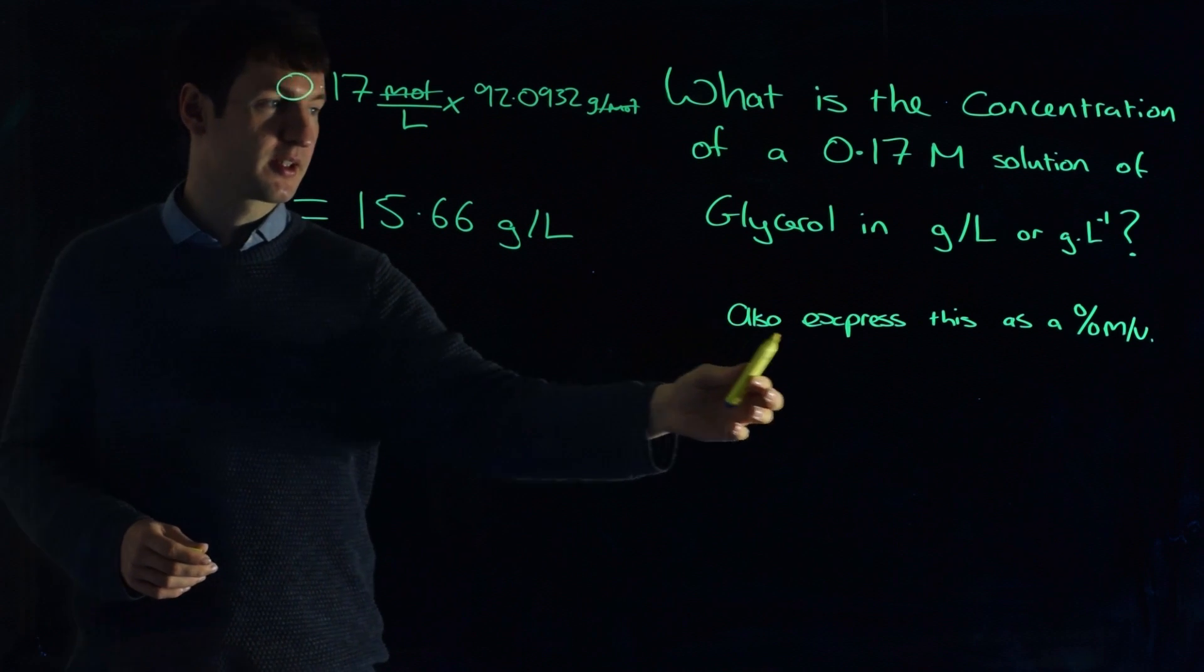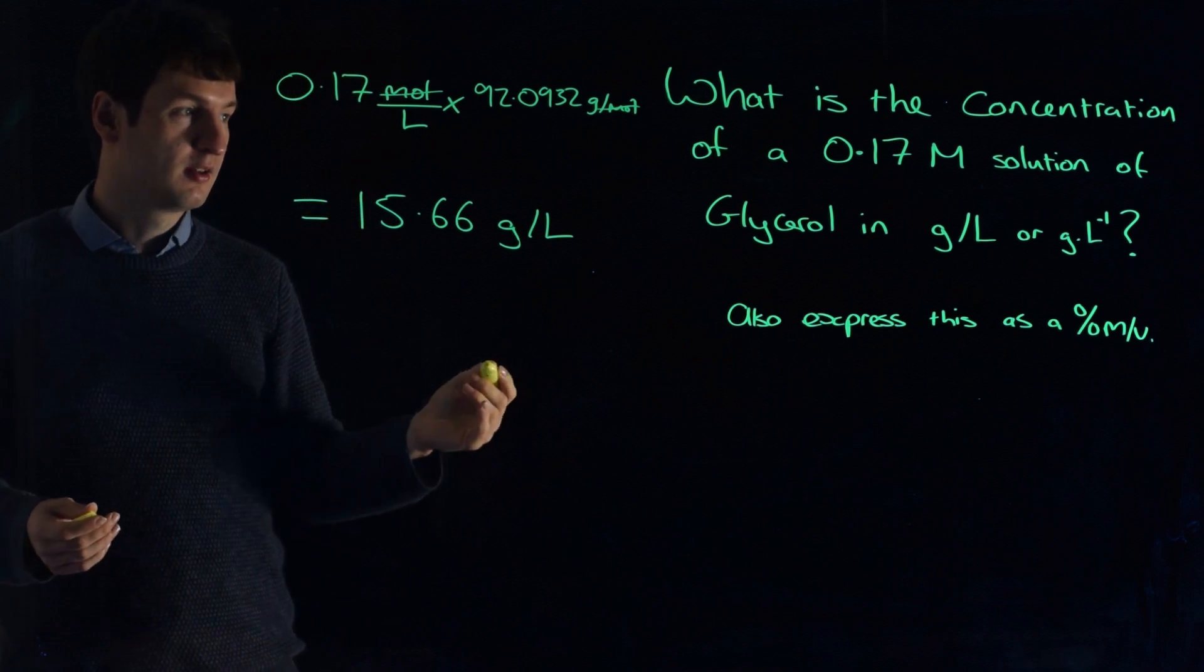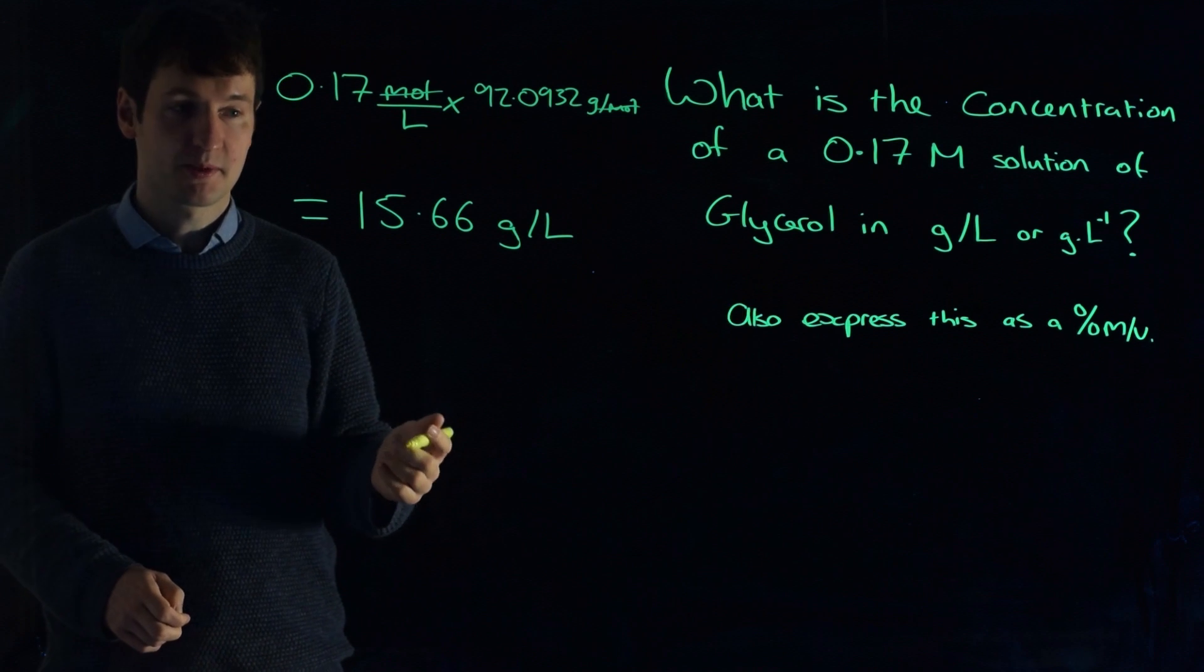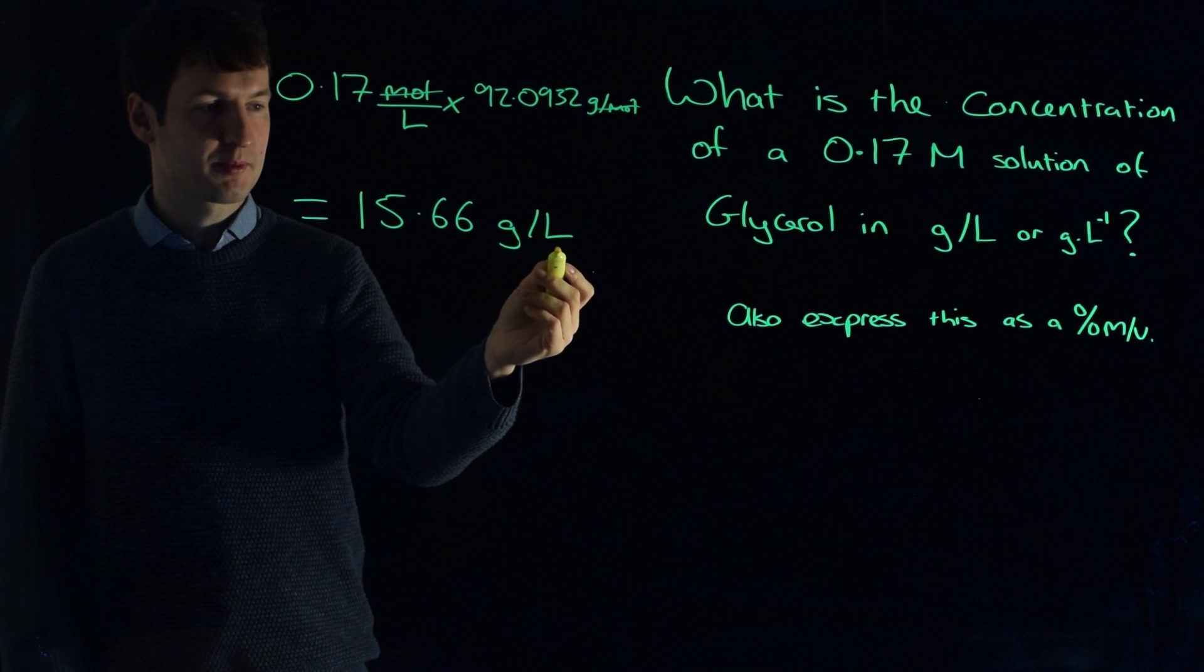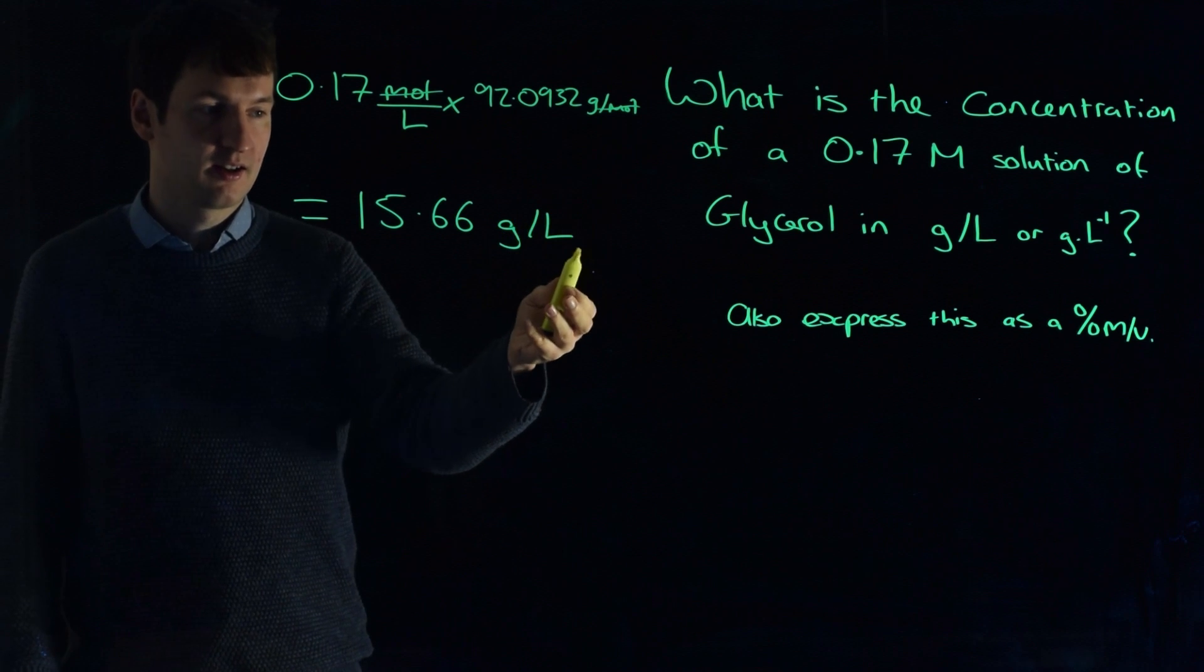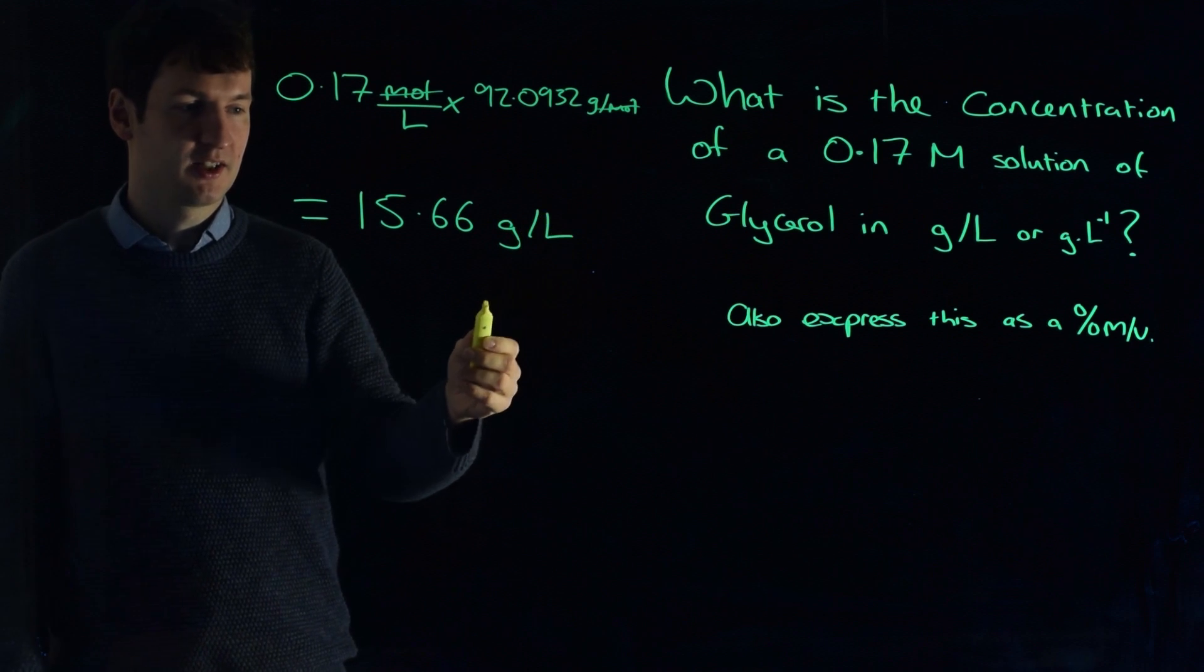The second part is to express this as a mass percent volume. Another way of saying mass percent per volume is grams per 100 milliliters. So we have grams per liter. To turn that into grams per 100 milliliters, 100 milliliters is 0.1 or one tenth of a liter.